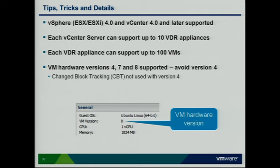Note the virtual machine hardware version: versions 4, 7, and 8 are supported. However, version 4 does not work with Change Block Tracking — so it has to be version 7 or higher for CBT. You can still back up hardware version 4 VMs, but you'll essentially be doing a full backup every time. Go ahead and upgrade the virtual hardware and install VMware Tools along with that.